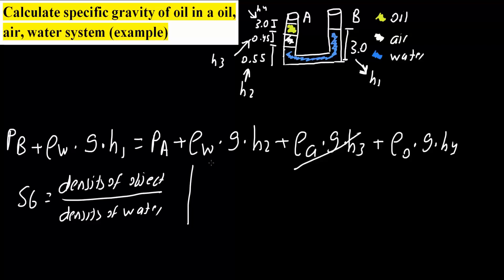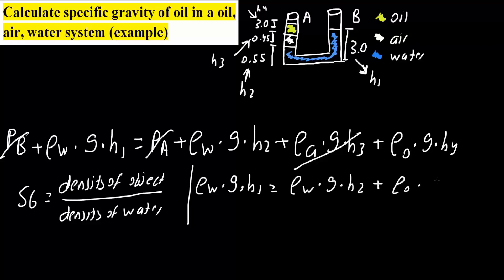Now we have water, water, and oil — so this is more solvable. Pb and Pa are both open to the atmosphere, so their pressures are the same and we can cancel them. Rewriting: density of water times G times H1 equals density of water times G times H2 plus density of oil times G times H4. We can cancel G throughout.